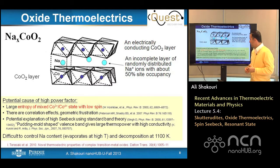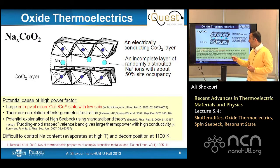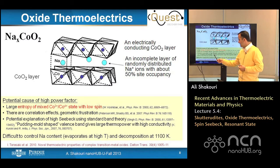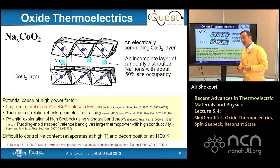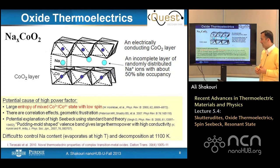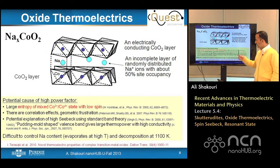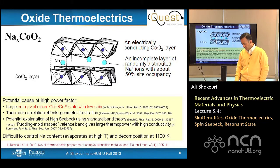There is also a paper by Kuroki and Arita suggesting that the special 'pudding mold' shape of the valence band can give rise to high conductivity and high Seebeck coefficient. Practically, it is difficult to control the sodium compound — it evaporates at high temperatures and decomposes at 1,100 Kelvin, presenting material challenges for sodium cobalt oxide.